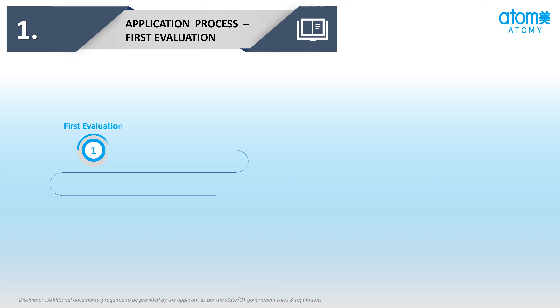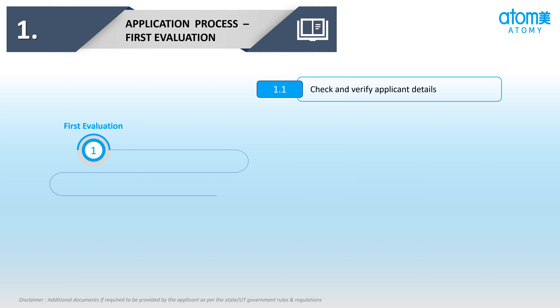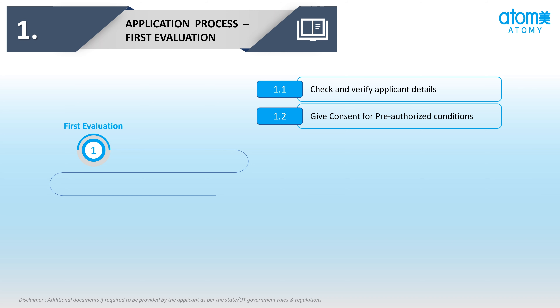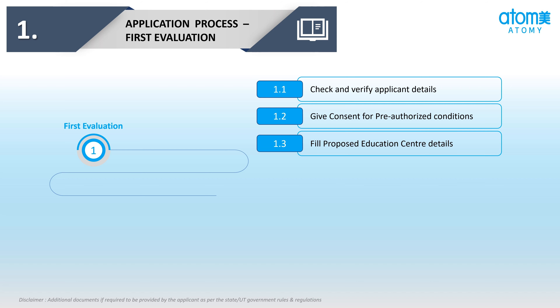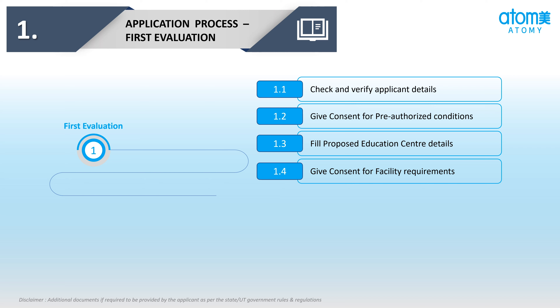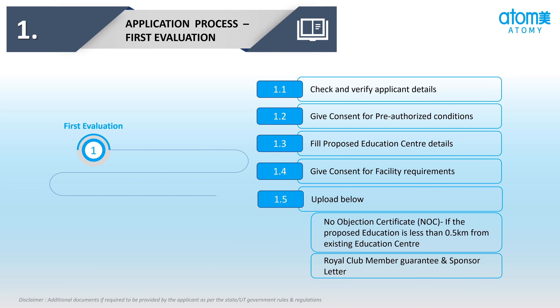1st Evaluation की 5 Sub-Stages हैं: पहली स्टेज - Applicant की Details को Check और Verify करना। दूसरी स्टेज - Pre-Authorized Conditions पर Consent देना। तीसरी स्टेज - Proposed Education Center की Details को Fill करना। चौथी स्टेज - Facility Requirements के लिए Consent देना। पाचवी स्टेज - Infrastructure Requirements के लिए Consent देना।